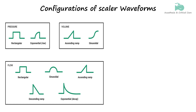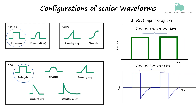The first type is the rectangular waveform, also known as the square wave or constant waveform. This waveform maintains a constant value over time, meaning that once a particular value is set, it remains stable throughout the duration of the breath. Such graphics are seen during pressure or volume control ventilation.